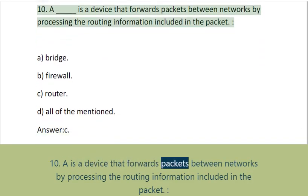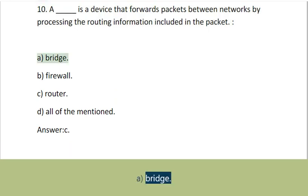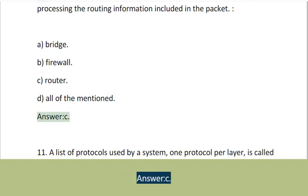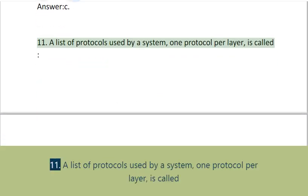Question 10: A blank is a device that forwards packets between networks by processing the routing information included in the packet: A. Bridge, B. Firewall, C. Router, D. All of the mentioned. Answer: C.